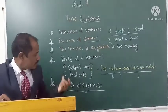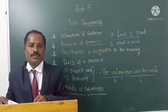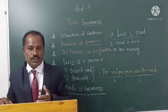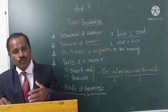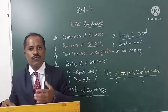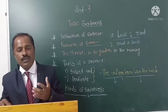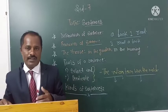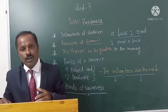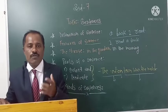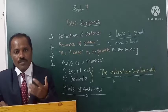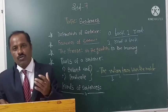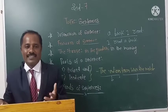Students, we have discussed the kinds of sentences. Basically, there are four kinds of sentences in our language. The first kind is the assertive sentence, the next is the imperative sentence, the third is the interrogative sentence, and the last is the exclamatory sentence. In the next period, we are going to discuss the structure of each kind — how is the structure of an assertive sentence, imperative sentence, interrogative sentence, and exclamatory sentence.